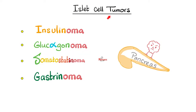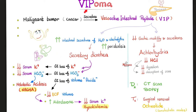These are the islet cell tumors: insulinoma, glucagonoma, somatostatinoma, gastrinoma, and today's topic — VIPoma. If you have this malignant tumor, it secretes too much VIP, too much vasoactive intestinal peptide, which boosts intestinal secretions but inhibits motility and secretion of the stomach. When you boost intestinal secretions and increase peristalsis, you cause secretory diarrhea.